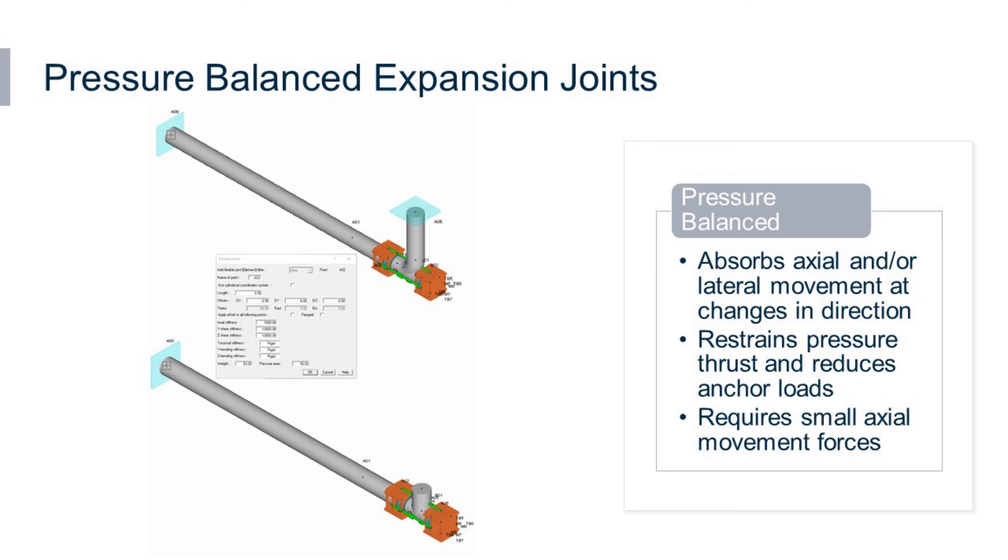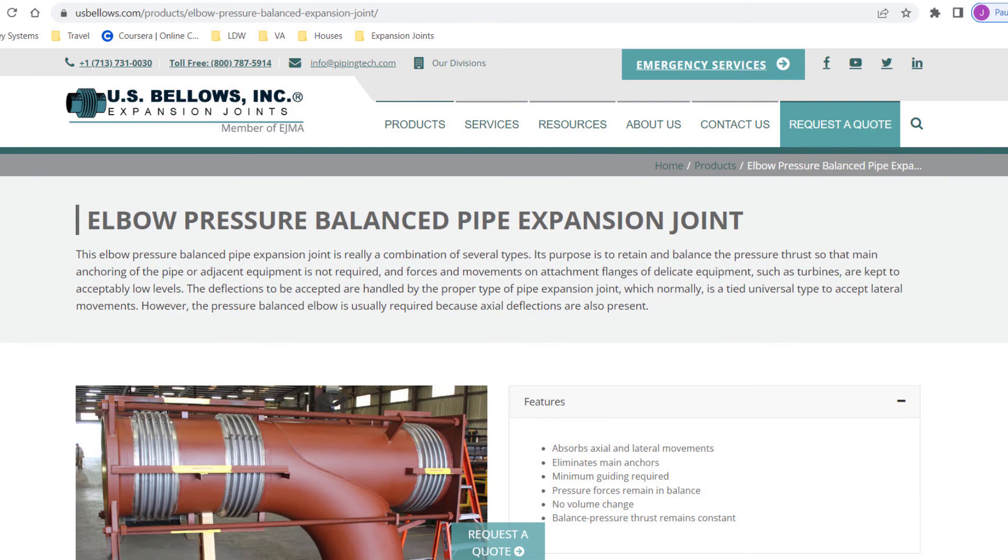I'll just show a web page here. This is the single bellows and then the pressure balancing bellows over there. This is from U.S. Bellows Inc., just a website, but this had a nice picture to show if you need to use the tied universal expansion joint on this side in the piping system and then the pressure balancing bellows over there.